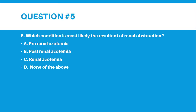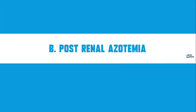Number 5. Which condition is most likely the result of renal obstruction? A. Prerenal azotemia, B. Postrenal azotemia, C. Renal azotemia, or D. None of the above. The correct answer for number 5 is letter B — Postrenal azotemia.